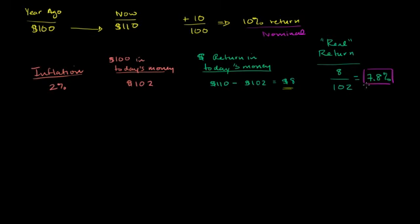In the last video, we were able to calculate the real return by putting everything in today's dollars. Put that $100 we invested a year ago in today's dollars, figure out what our actual return was, our dollar returns in today's dollars, and then we got our real return.